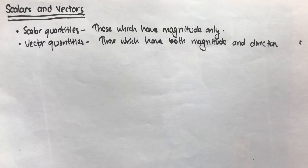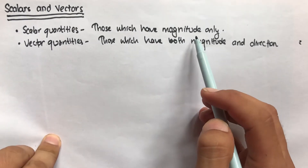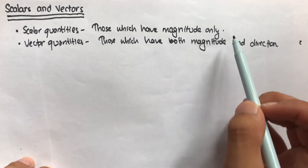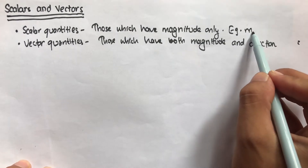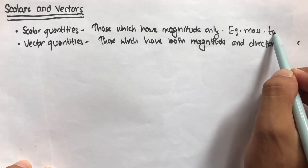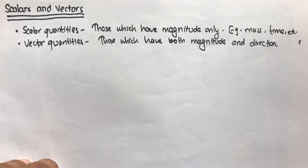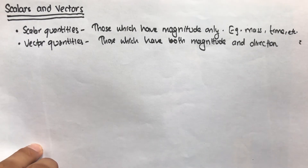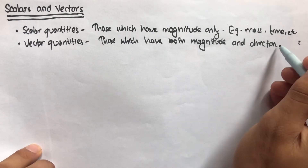Today we're going to talk about scalar quantities and vector quantities. Scalar quantities are those quantities which have magnitude only — for example, mass, time, length, and temperature. They have magnitude only. Vector quantities are those which have both magnitude and direction — for example, force, velocity...